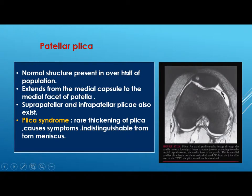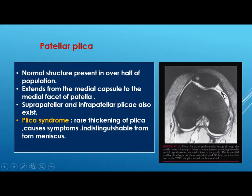The patellar plica is a normal structure present in over half of the population. It extends from the medial capsule to the medial facet of the patella. Suprapatellar and infrapatellar plica also exist. Plica syndrome rarely occurs but there will be thickening of this plica. It may be symptomatic and indistinguishable from a torn meniscus.